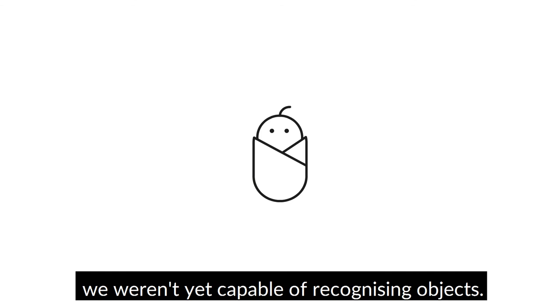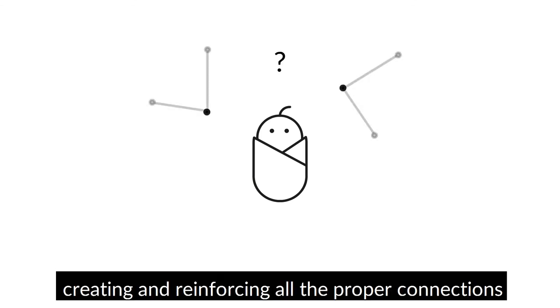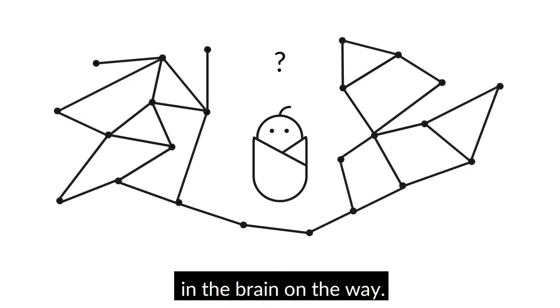When we were babies, we weren't yet capable of recognising objects. We had to learn to do so, creating and reinforcing all the proper connections in the brain on the way.